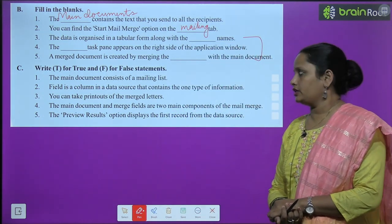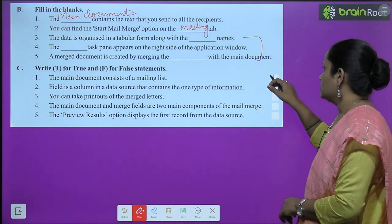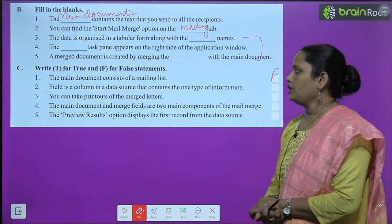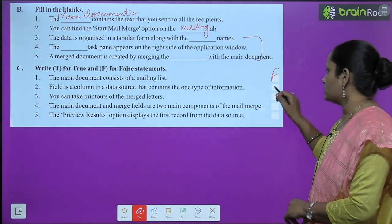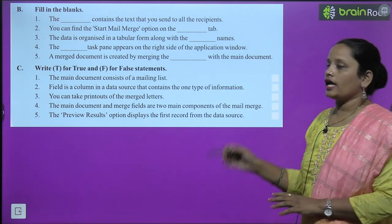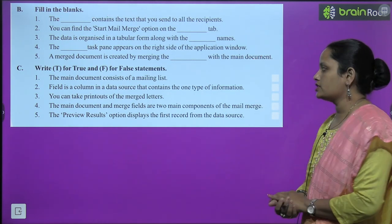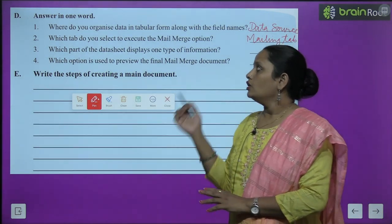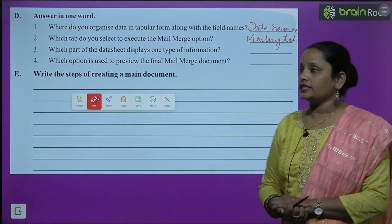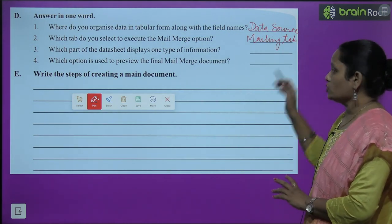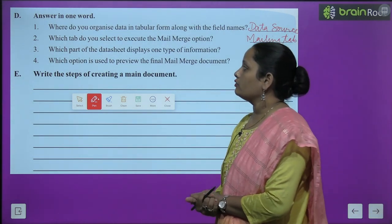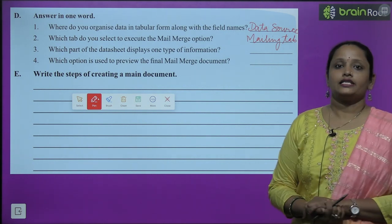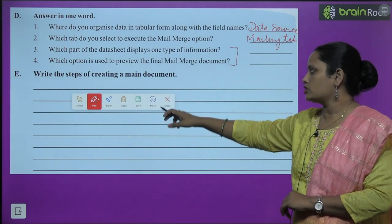First question: the main document consists of the mailing list. This is false. Second: a field is a column in the data source that contains one type of information — this is true. Complete the rest of the questions yourself. Answer in one word: data is organized in tabular form in the data source; to execute mail merge, select the Mailings tab.